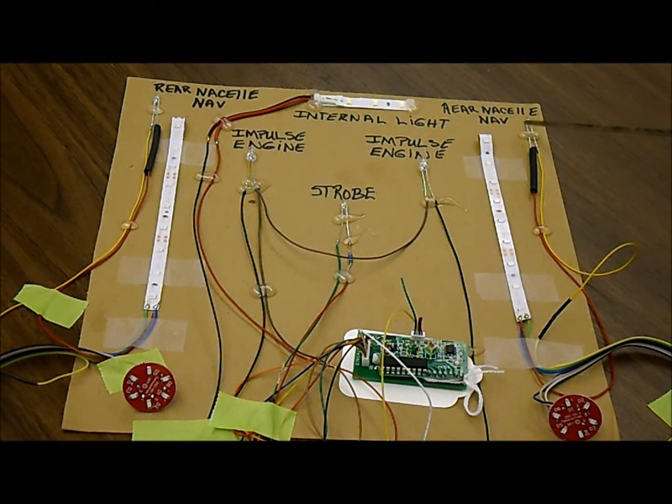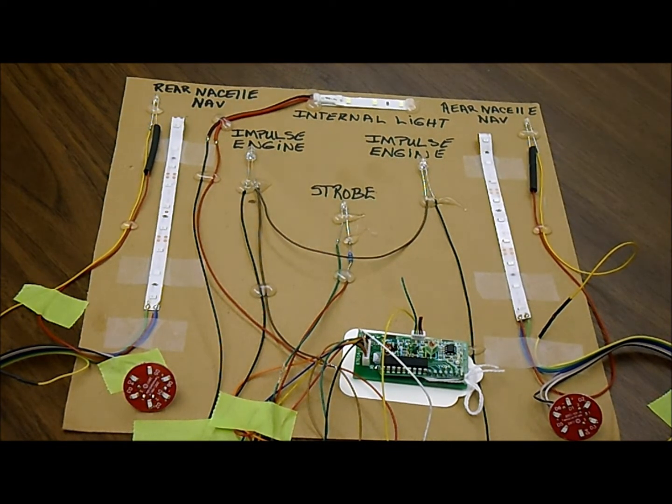These are the rear navigation lights on the nacelles on this side and that side. These LED strips right here represent the blue grills on the side of the nacelles.